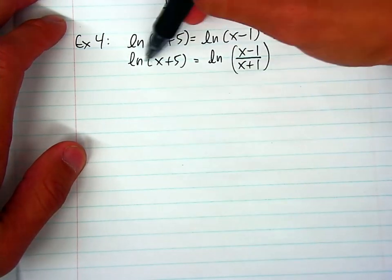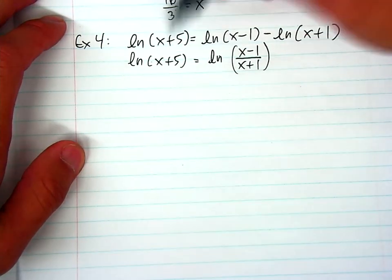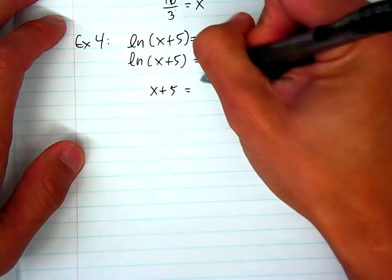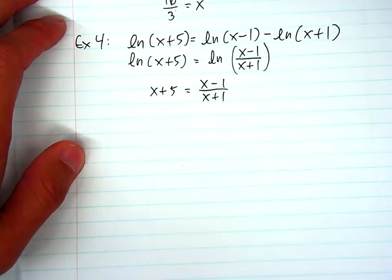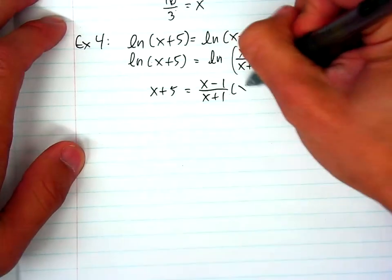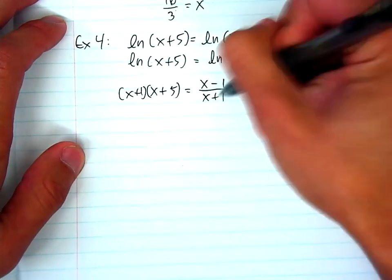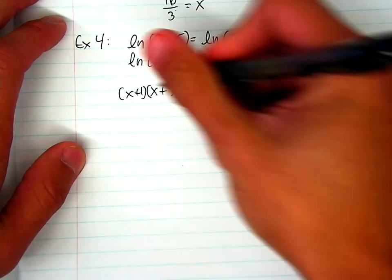Okay, so if I look on both sides now, they're both natural logs. They have the same base, which is e. And I can probably drop the natural log, so I'll have x plus 5 equals x minus 1 over x plus 1. And from there, I can solve for x by multiplying x plus 1 on both sides.